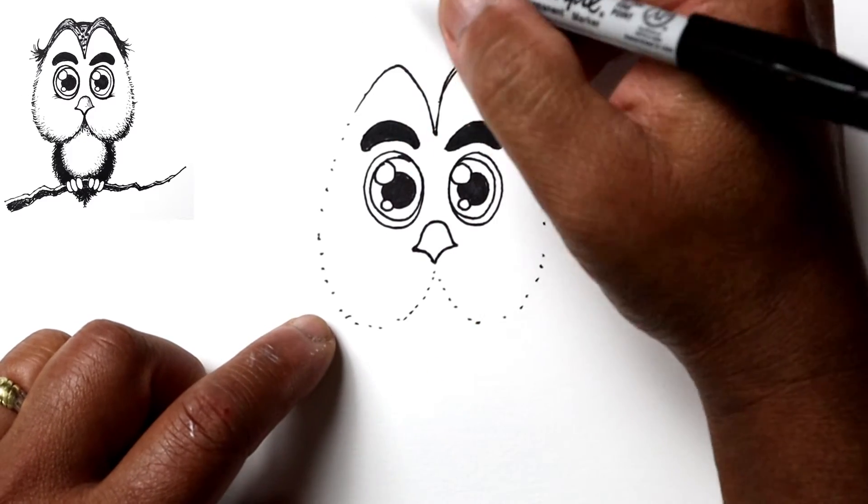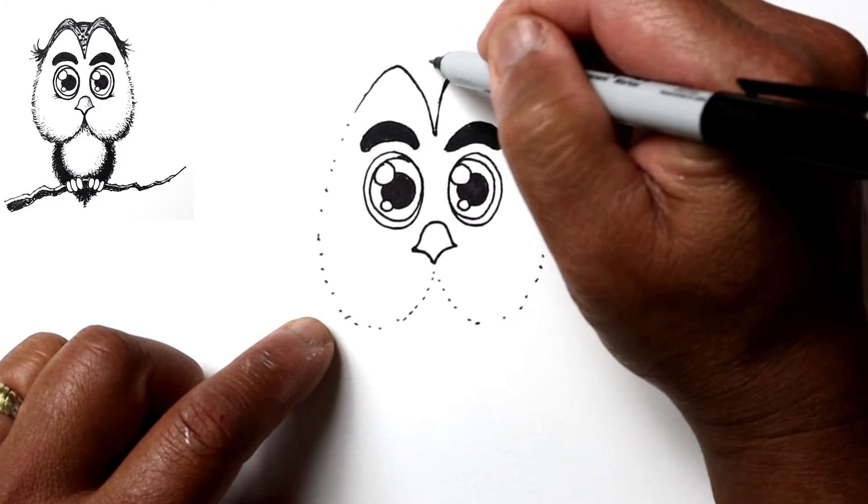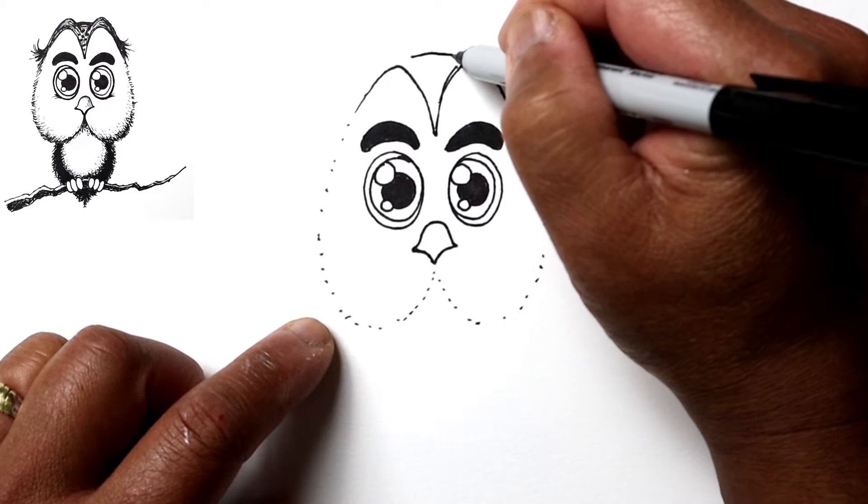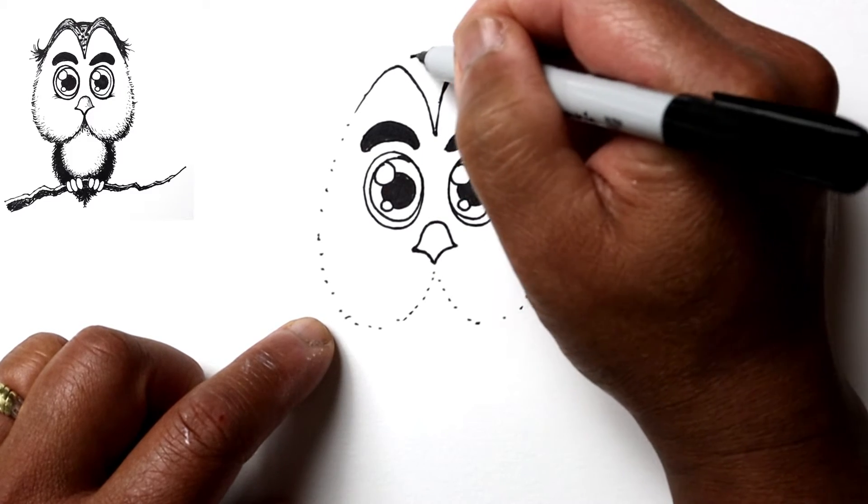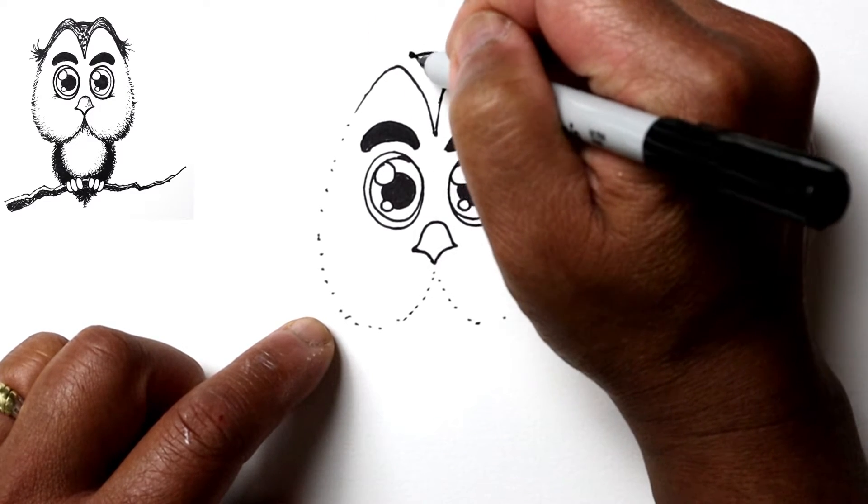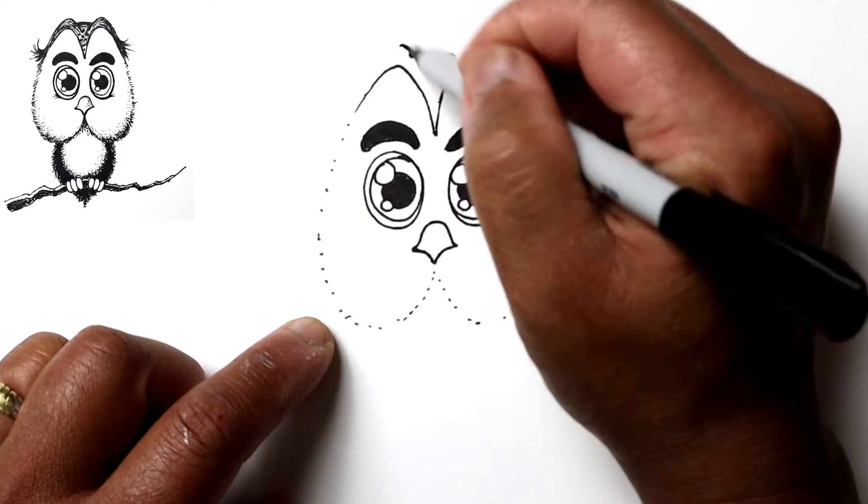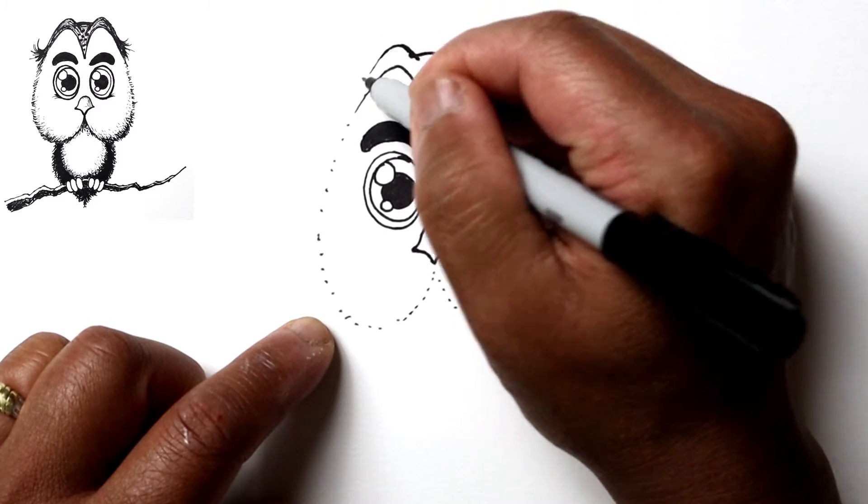So next I'm going to start working on the top of the head. So here's the top of the head, just slightly curved line, and we're going to extend these lines here that go above the eyes.